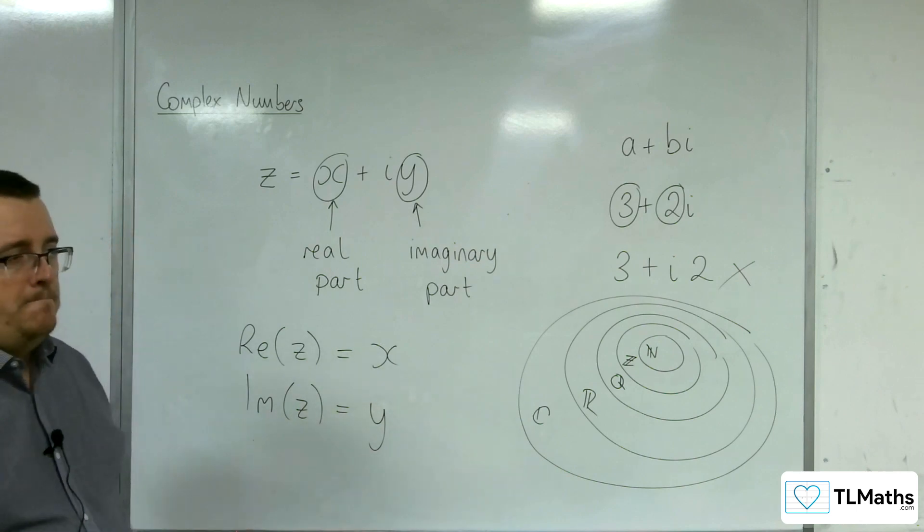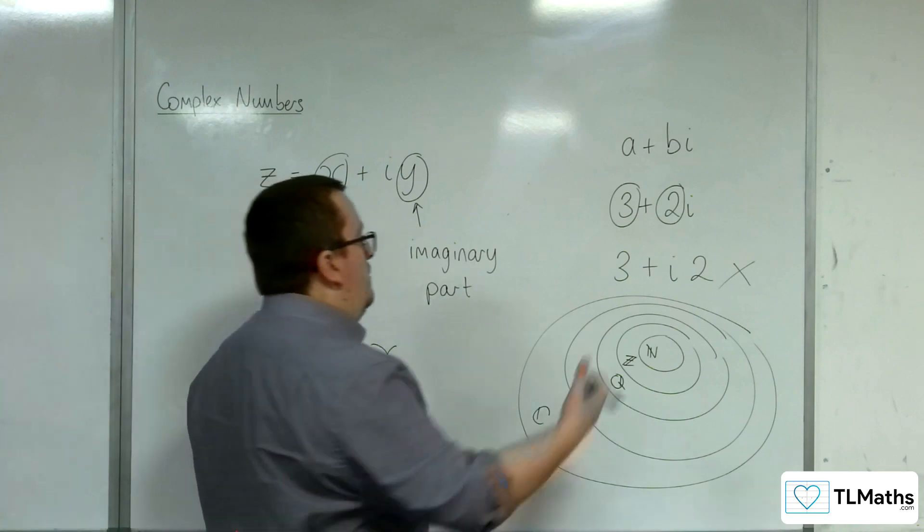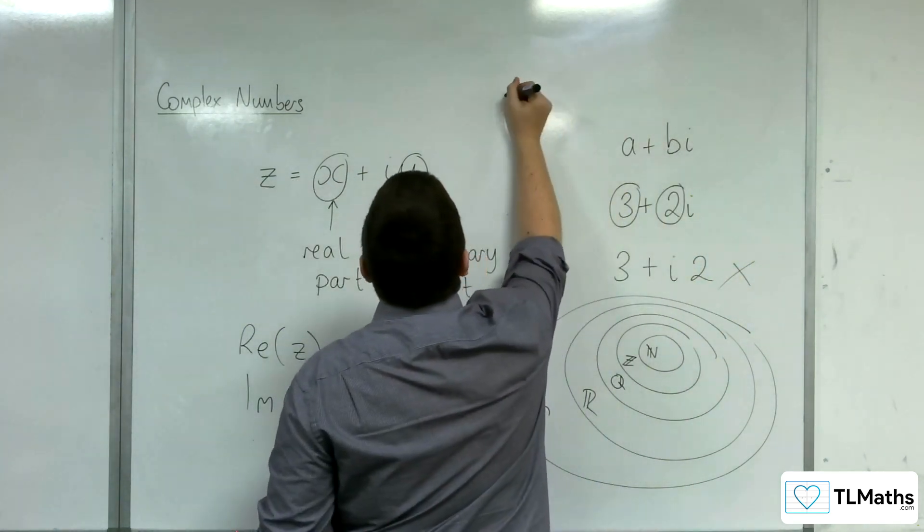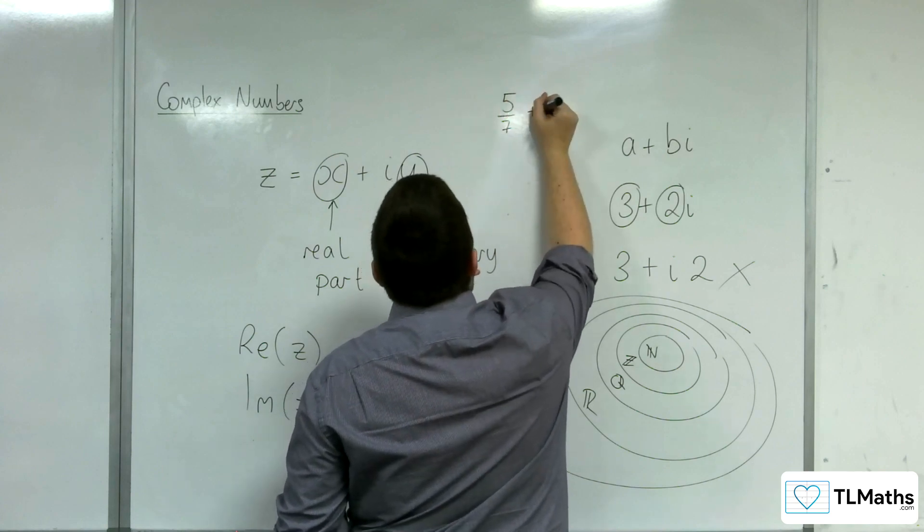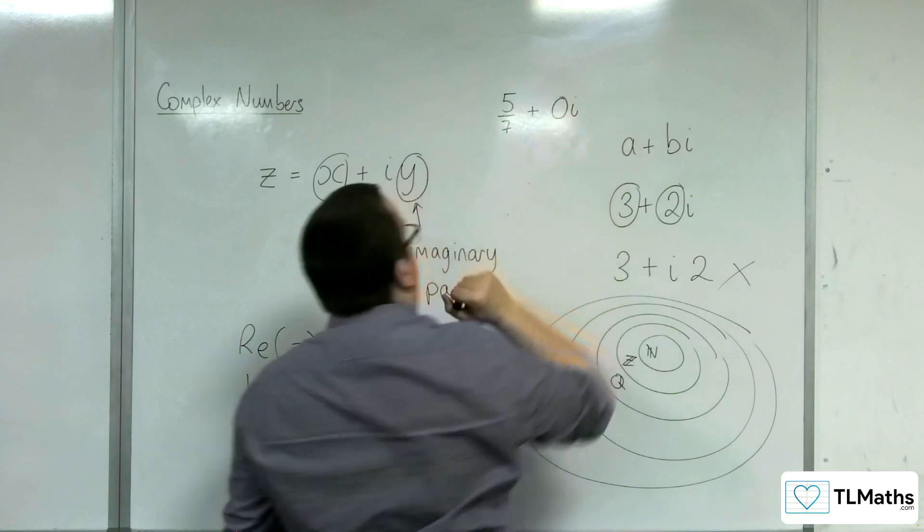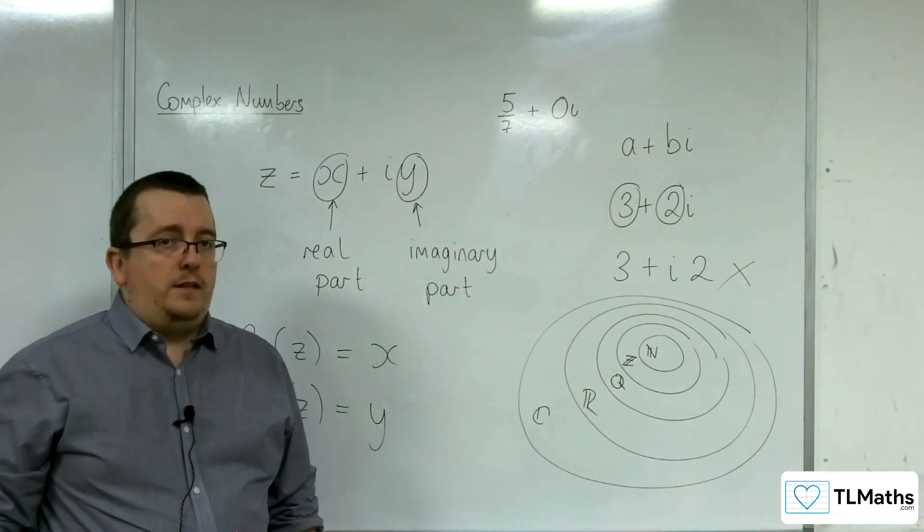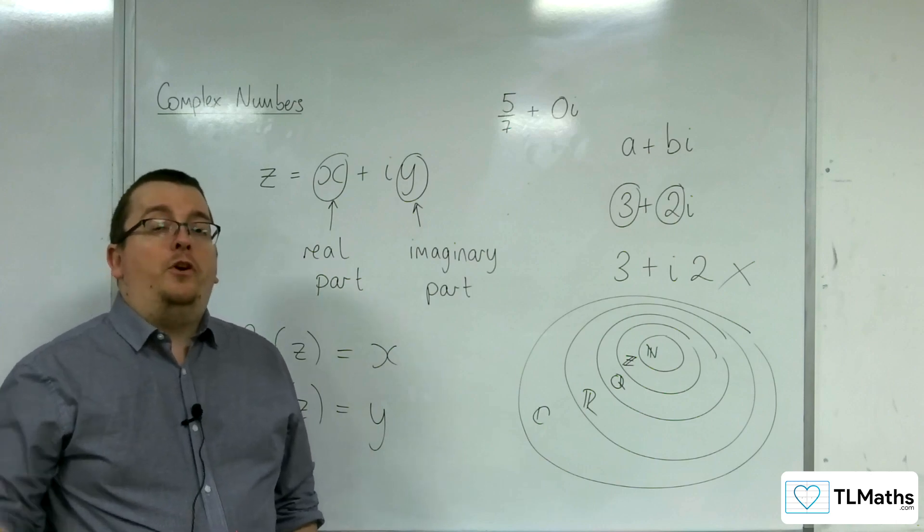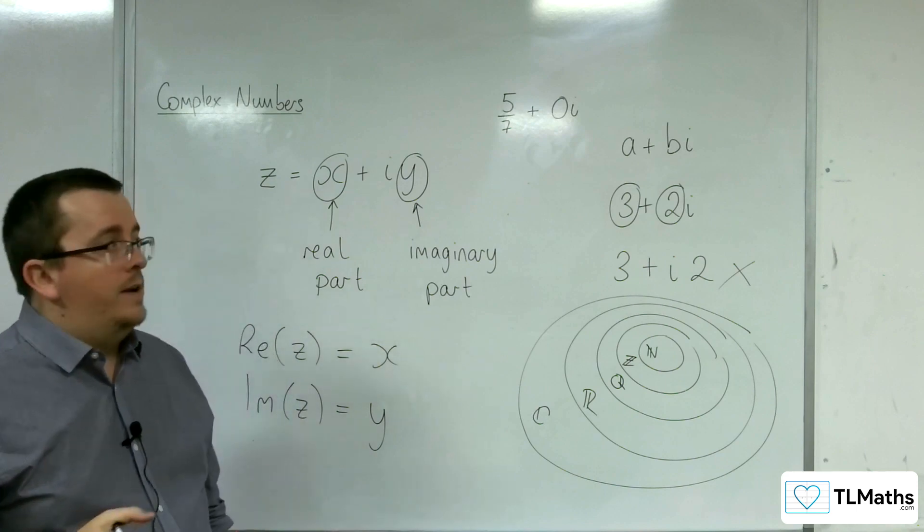Well, the idea is that if you can think of any number that you've previously thought of before you met complex numbers. So let's say 5 sevenths, for example. A number 5 sevenths. That's as good as any. Okay. So the number 5 sevenths, you can write as 5 sevenths plus 0i. So 5 sevenths is actually a complex number. It's just got 0 as its imaginary part. So 0 is the coefficient of i.